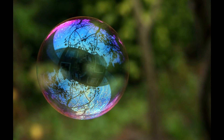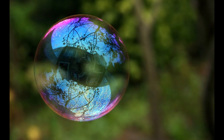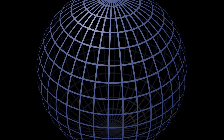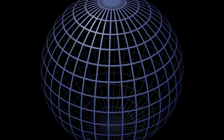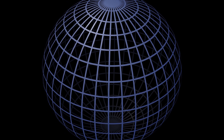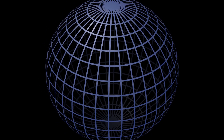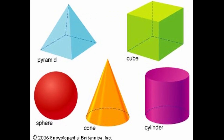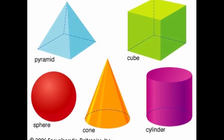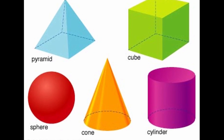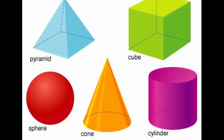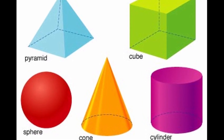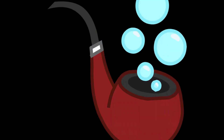Surface tension pulls the molecules of water into the tightest possible groupings, and the tightest possible grouping that any collection of particles can achieve is to pack together into a sphere. Of all possible shapes — cubes, pyramids, irregular chunks — a sphere has the smallest amount of outside surface area.